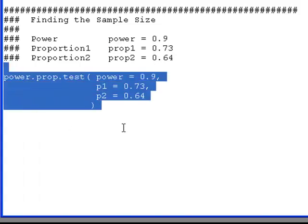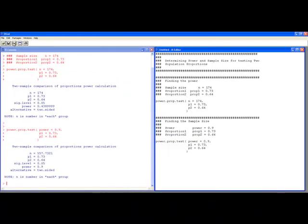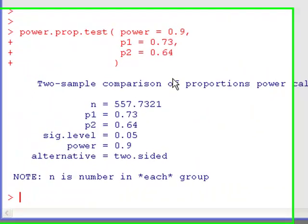So if I run this code here, notice the arguments are extremely similar as above, I just add power in instead of sample size, and I run this, I get this output over here.